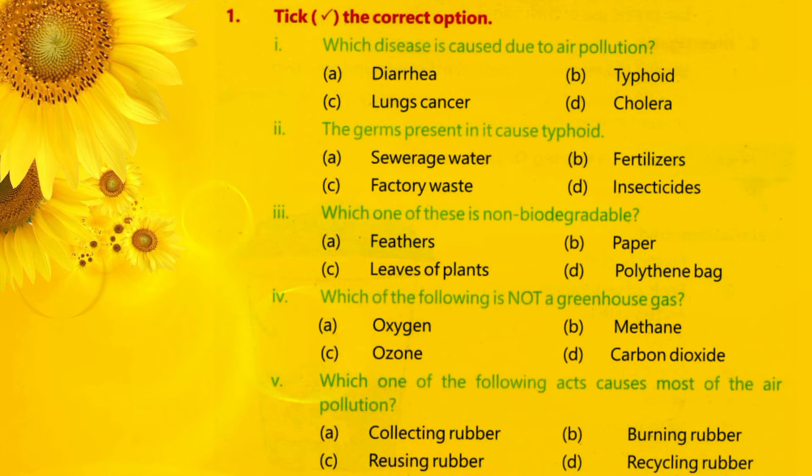Question 4: Which of the following is not a greenhouse gas? In mein se koon si greenhouse gas nahi hai? Options: A. Oxygen, B. Methane, C. Ozone, D. Carbon dioxide. Correct option is A — Oxygen.